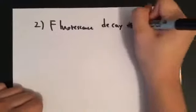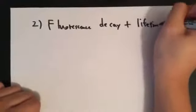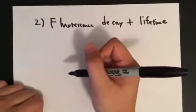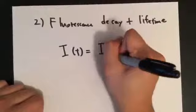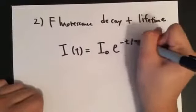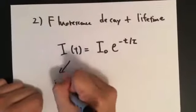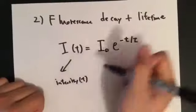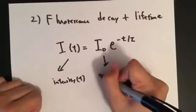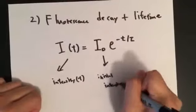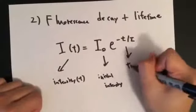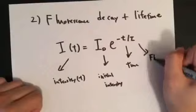As you can imagine, the fluorescence will eventually decay over time, which is described by an equation. I(t) equals I0 times e to the negative t over tau, where I(t) represents the fluorescence intensity at time t, I0 represents the initial fluorescence intensity, t represents time, and tau represents fluorescence lifetime.